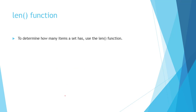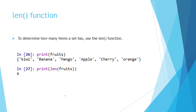Next, we will see the len function. To determine how many elements are available in the set, the len function is used. So, len followed by the set name — it will return 6 because our set contains a total of 6 elements.